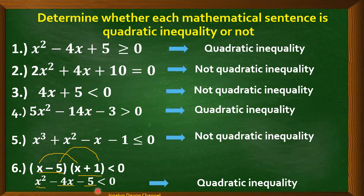Can we consider this as quadratic inequality? Yes — x² − 4x − 5 < 0 is an example of quadratic inequality.